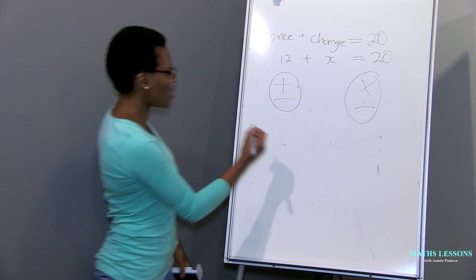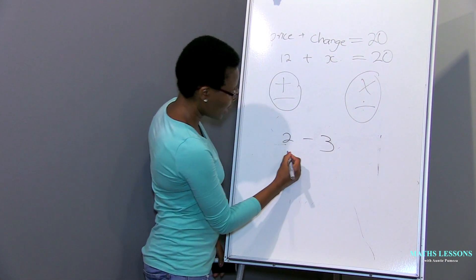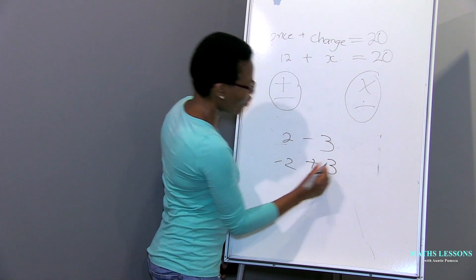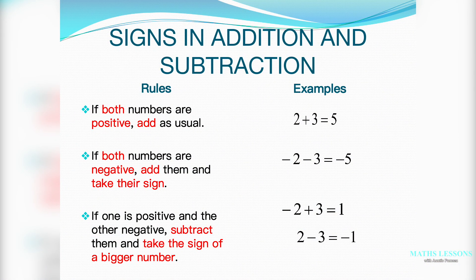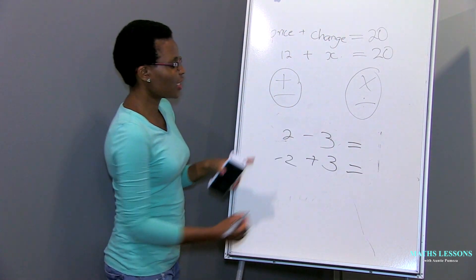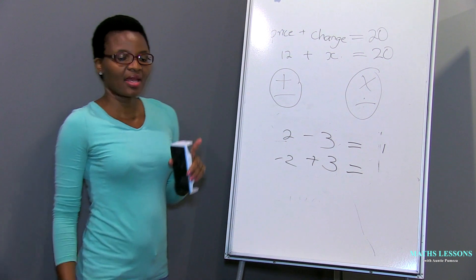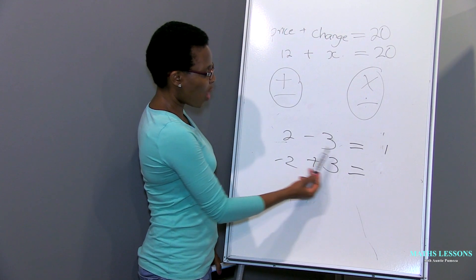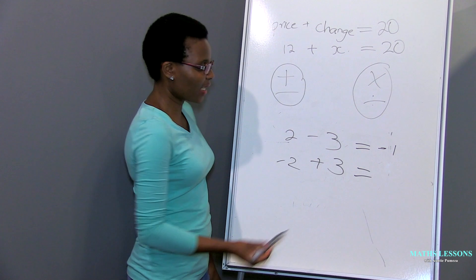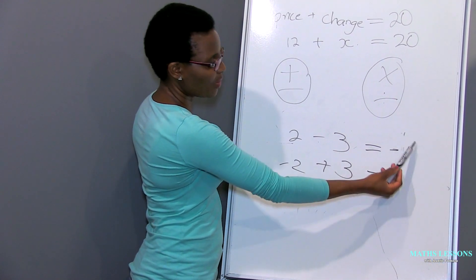When the signs are not the same, the rule is that you subtract — it doesn't matter which number has which sign, you just subtract. For example, three minus two is one. But then you must take the sign of the bigger number. So if the bigger number has a minus sign, your answer will be negative. The bigger number here is three, it has a minus sign, so your answer is negative one.